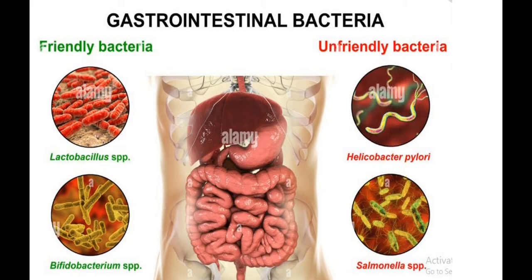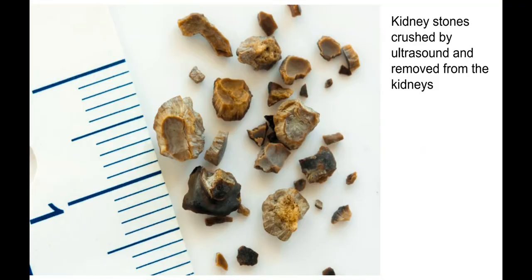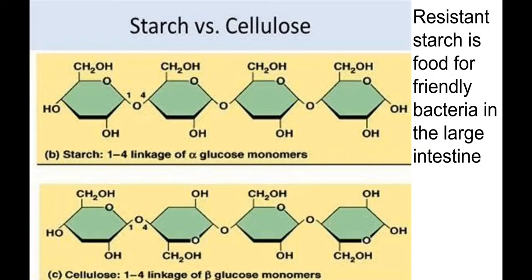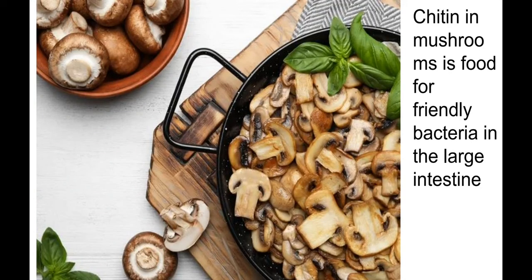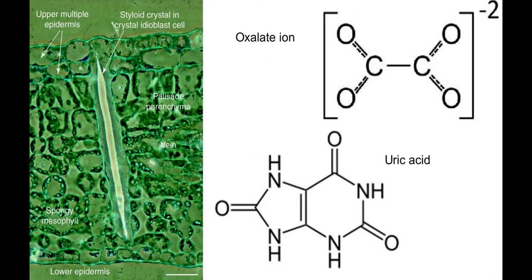You have to increase the number of friendly bacteria and provide them with good food. Friendly bacteria don't eat proteins — they eat special substances like starch. Potato starch is probably the best, and cassava starch is also very good quality. Mushrooms are especially good because they not only provide food for friendly bacteria but also lubricate the inside of the gut.